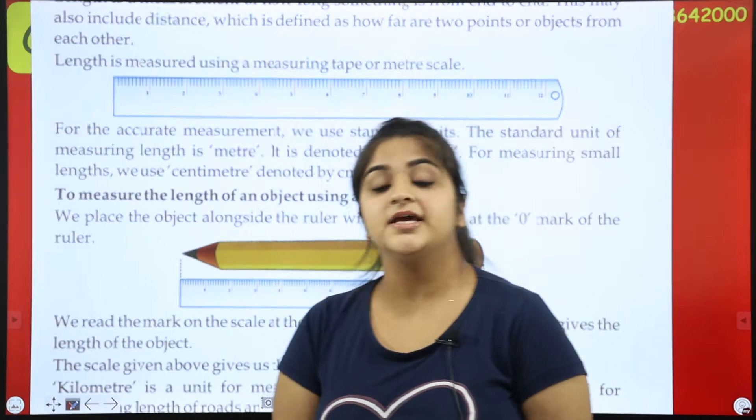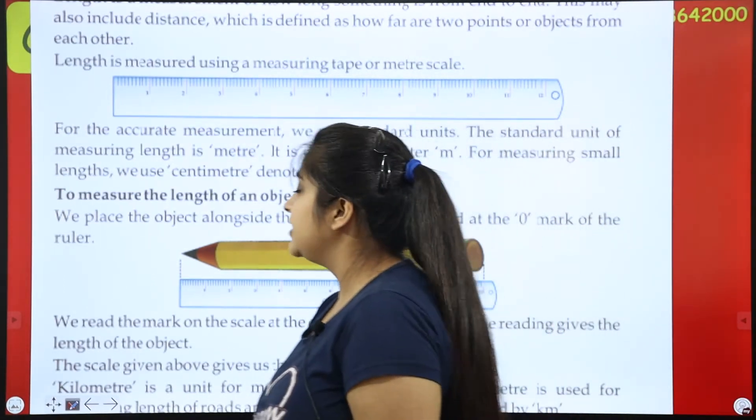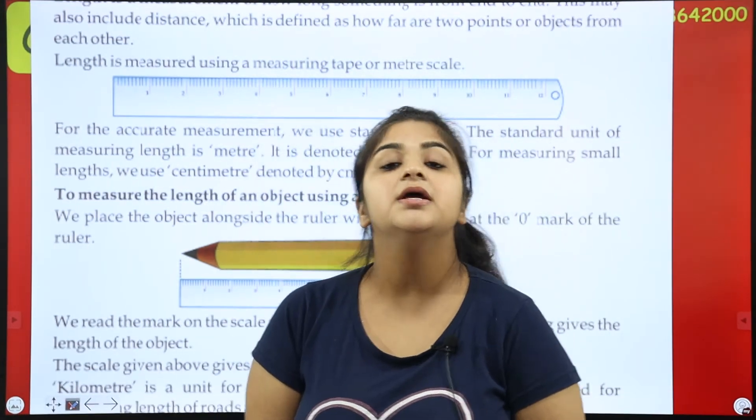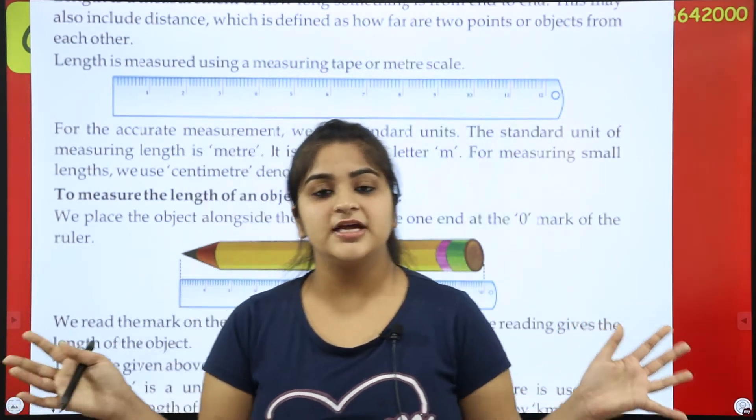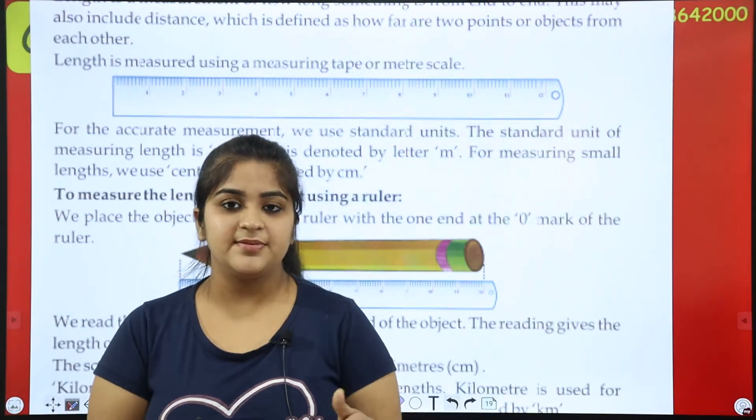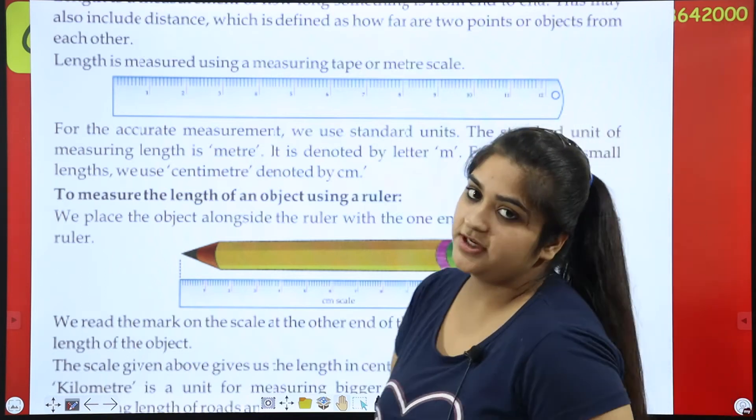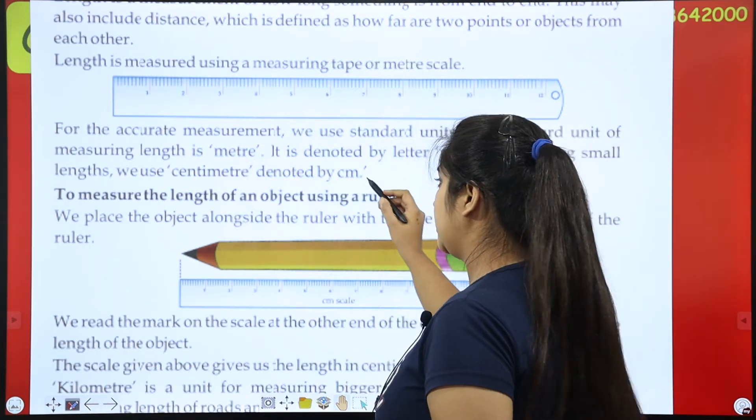And for measuring small length, we use centimeter, denoted by cm. If we don't have a big length, we don't have meters. If we don't have a small length, we don't have centimeters. The short form of cm, we don't have this. After cm, it is dot.